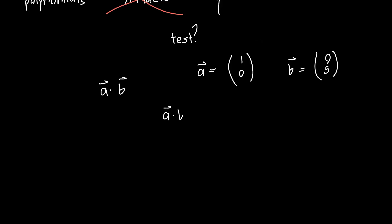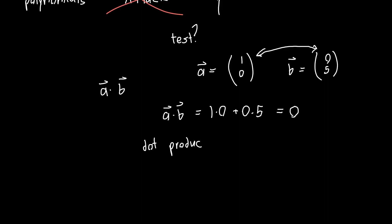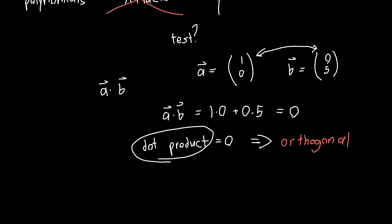If we take their dot product, we know this is just the point-wise element multiplication: 1 times 0 plus 0 times 5, and this is equal to 0. So these two vectors are orthogonal. Anytime the dot product of two vectors is 0, this means the vectors are orthogonal. And so I'd really like to figure out some sort of test, like this dot product, to figure out whether two functions are orthogonal.